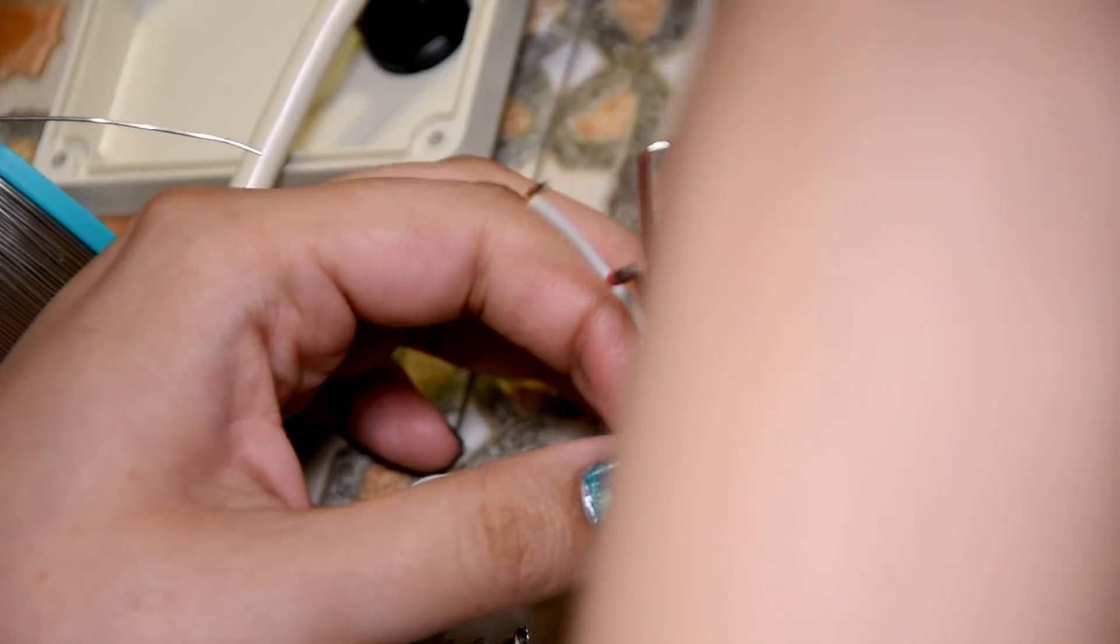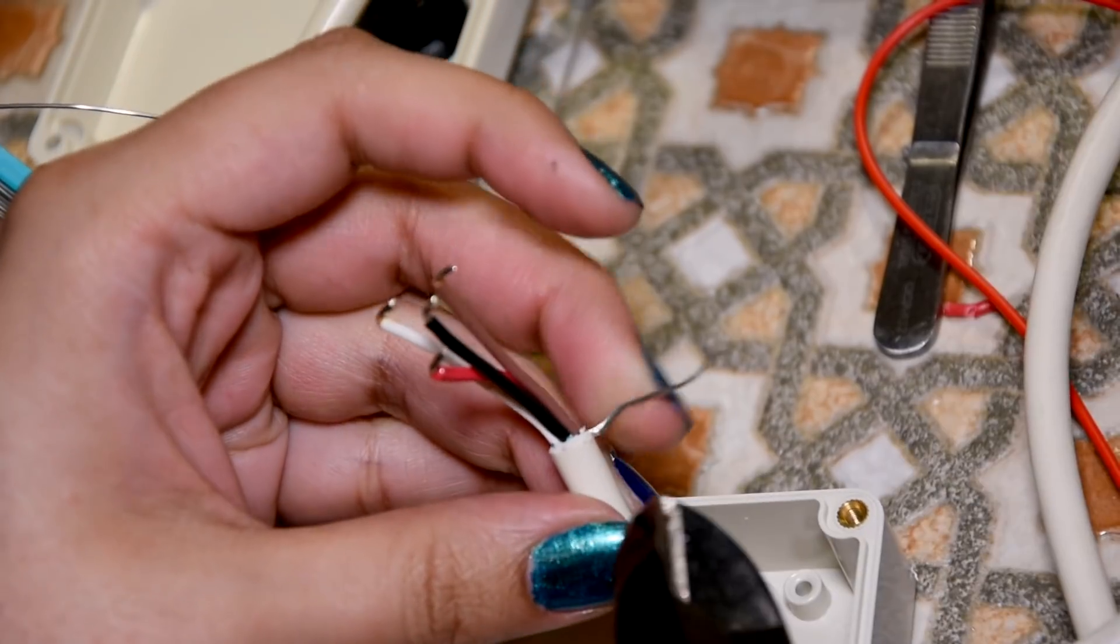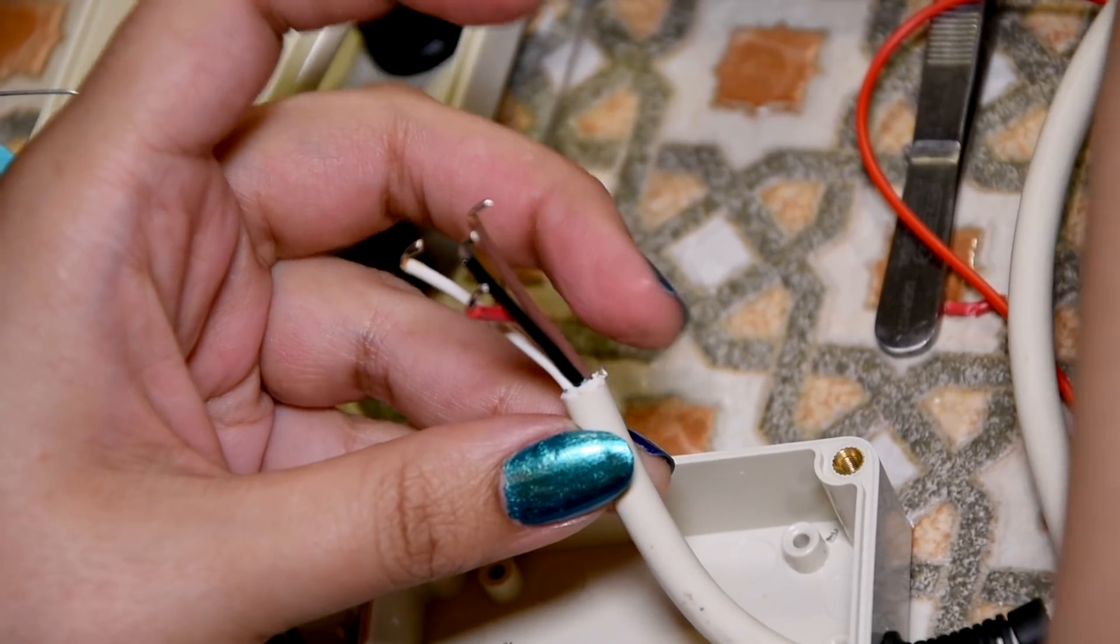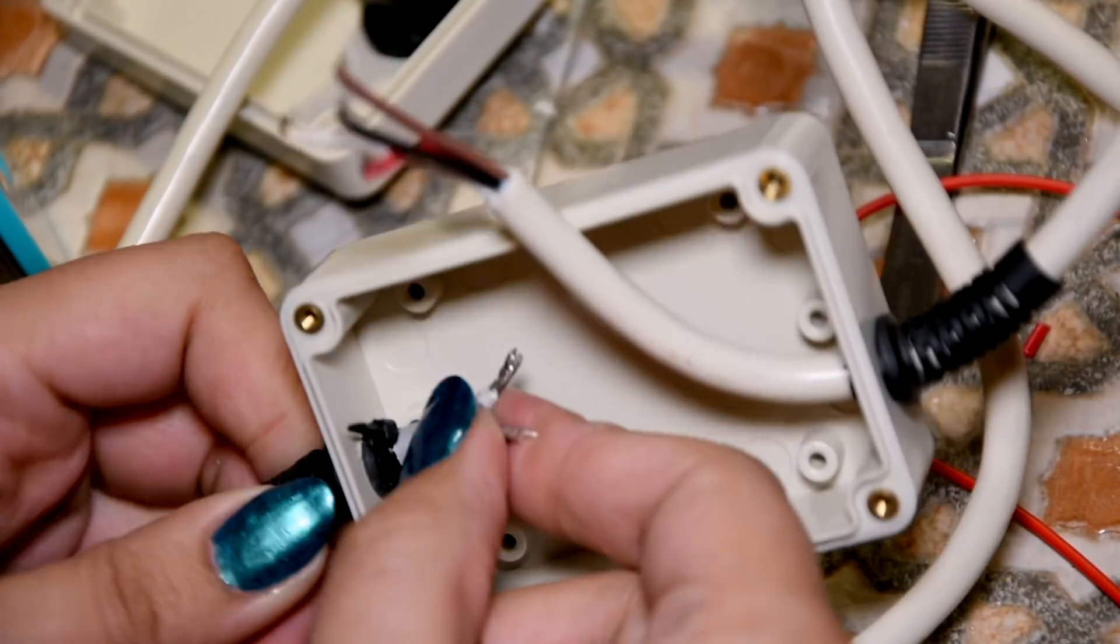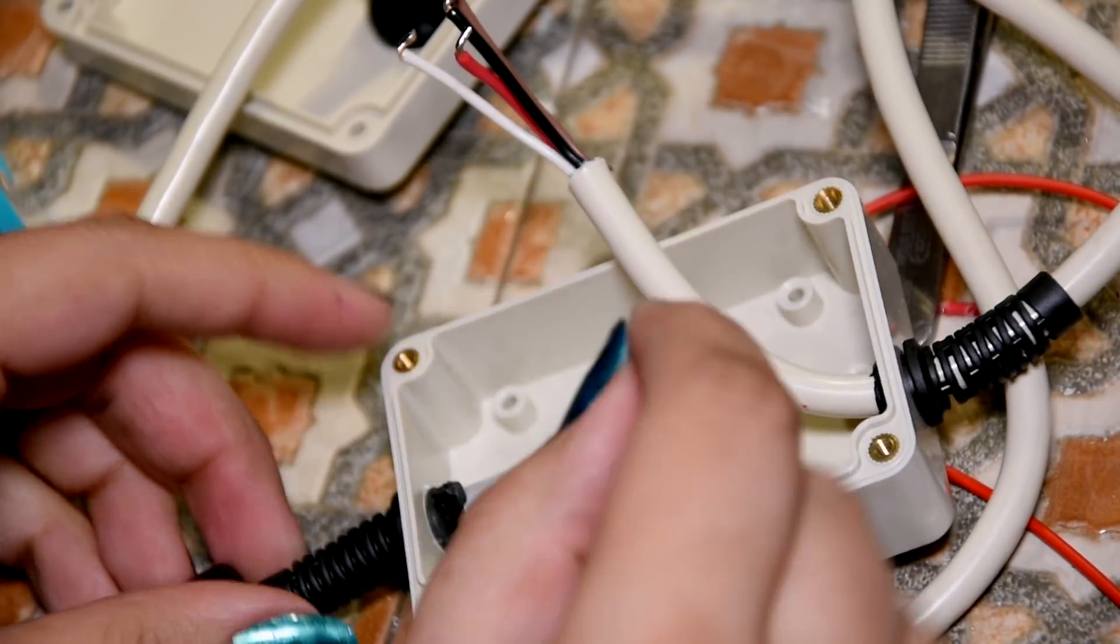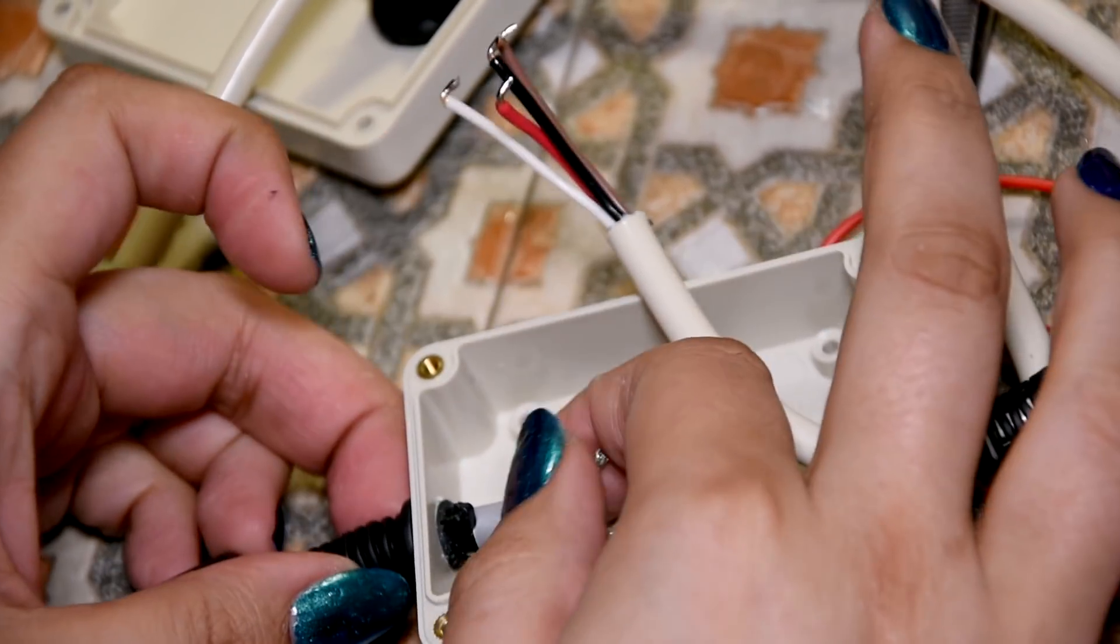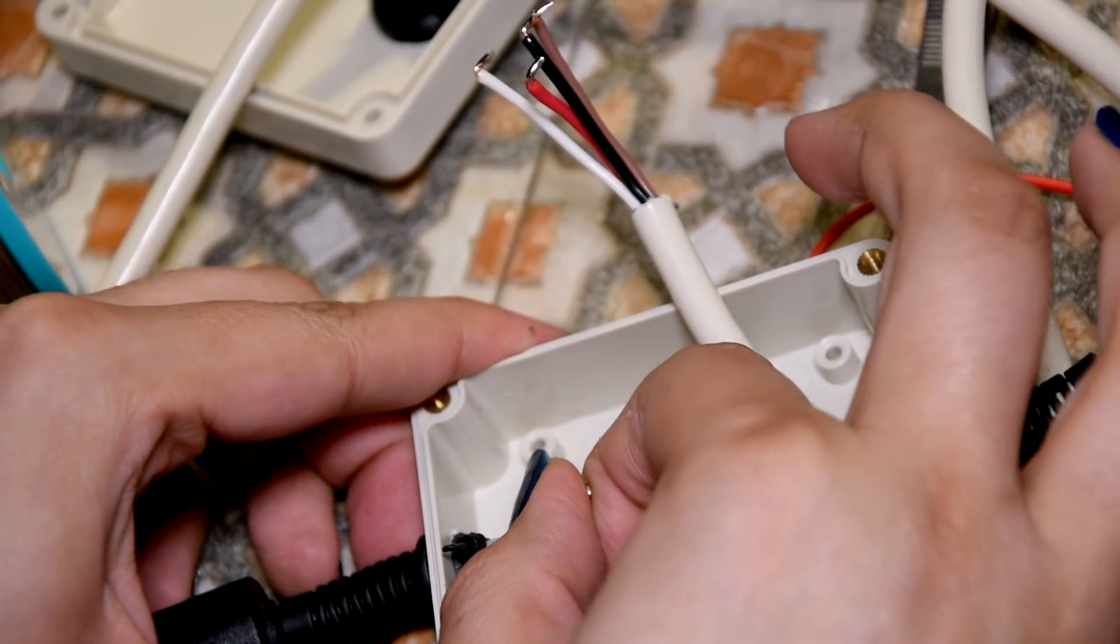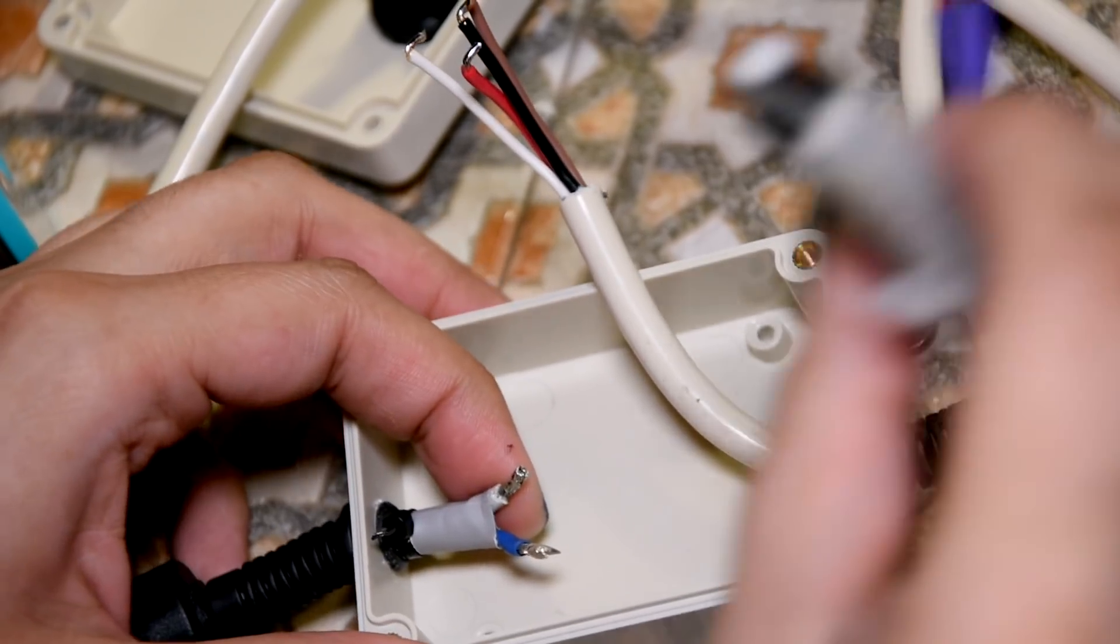Now this shield thing here, I just recommend cutting it off and just insulating that somehow because it's not needed. There we go, heat shrink tubing on that and it's well insulated. I am being very pedantic with this, really pedantic, making sure that there's nothing that can short and go wrong because this is going to be right above the freaking board.